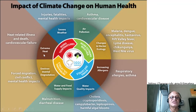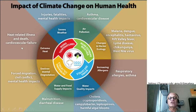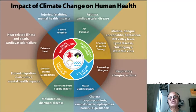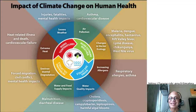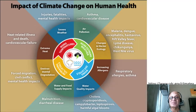Extreme heat of course causes heat-related illnesses and deaths, and cardiovascular failure. These are now tabulated extensively in countries like China and India, where more than a million premature deaths per year are attributable to air pollution. Combined with extreme heat, that can be a deadly combination.